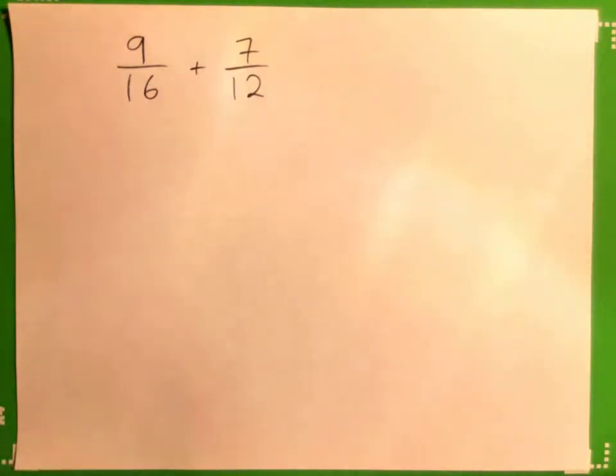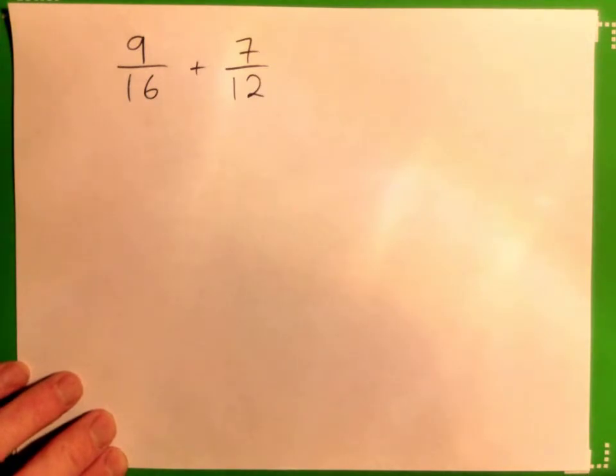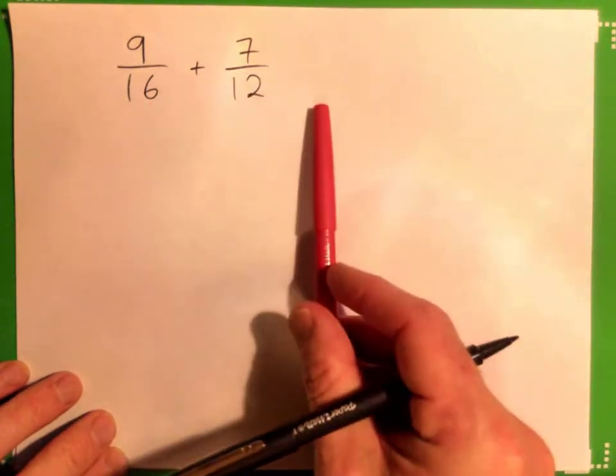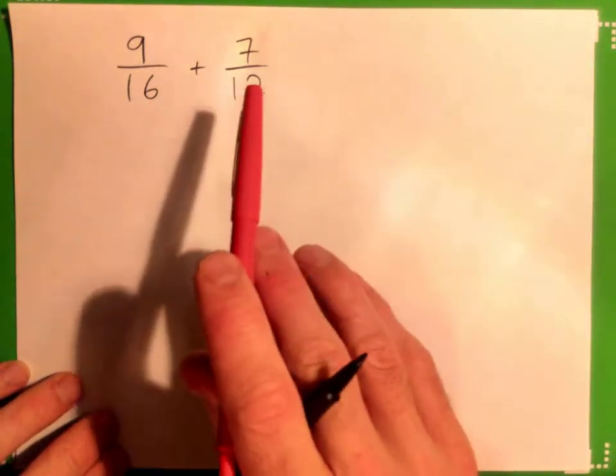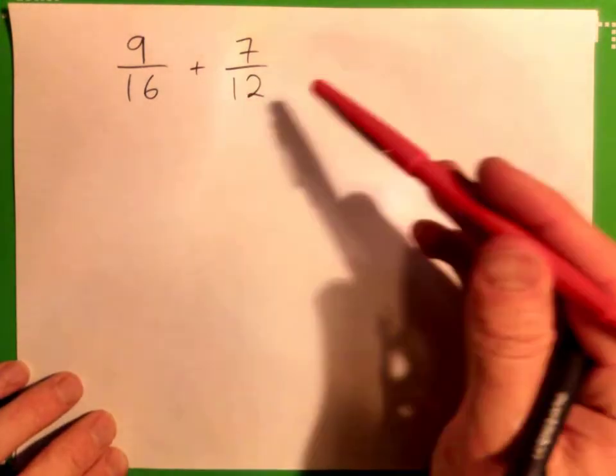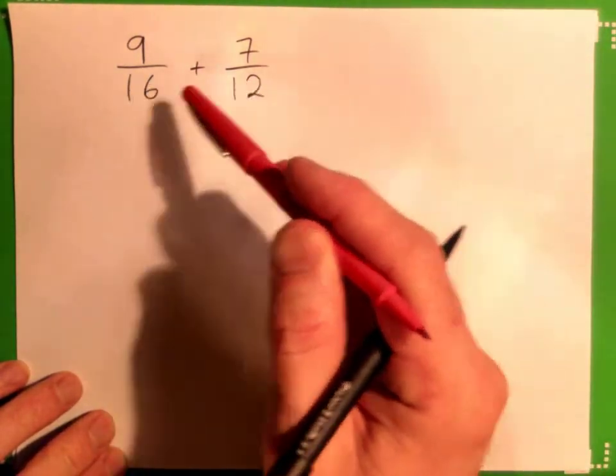Let's do 9 sixteenths plus 7 twelfths. The first thing I want you to do when you see something like this is recognize that we're adding fractions, so we've got to make the bottoms the same.